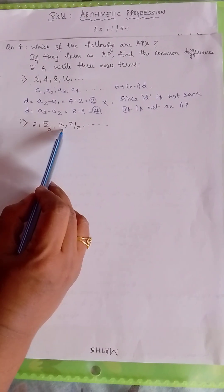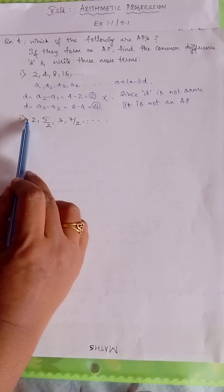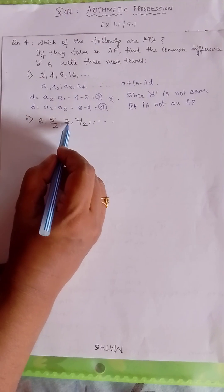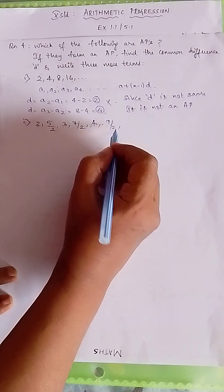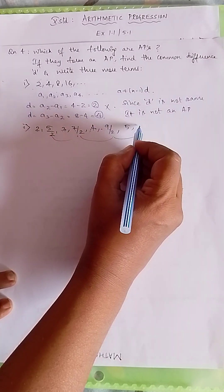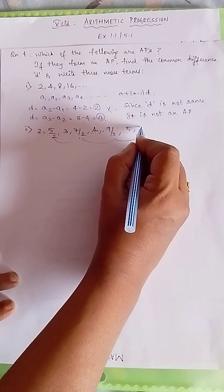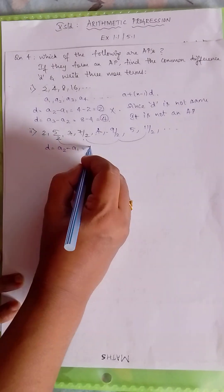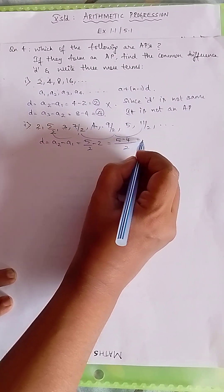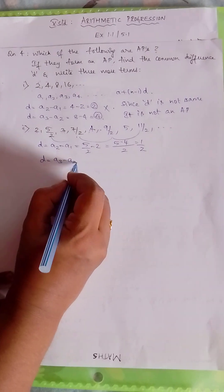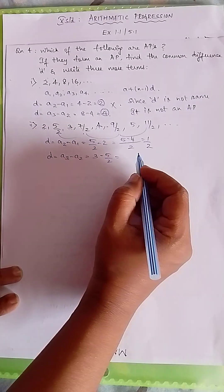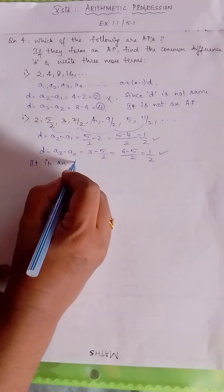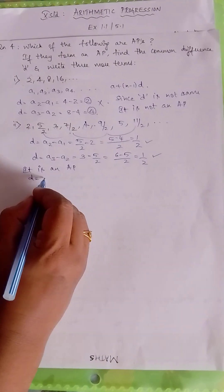So 2, leaving one term, it is 3 here. So obviously the next term will be 4. Here if it is 5/2, the previous term before 2 would be 3/2. Looking at the alternate terms: 5/2, 7/2, so the next alternate will be 9/2. Now to find the common difference: D = A2 minus A1 = 5/2 minus 2. Taking LCM: 5 minus 4 = 1/2. Again, D = A3 minus A2 = 3 minus 5/2 = 6/2 minus 5/2 = 1/2. Both are the same, so it is an AP, and D = 1/2.